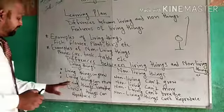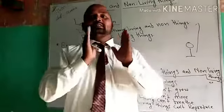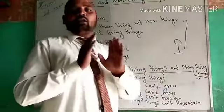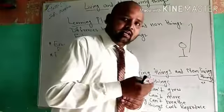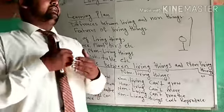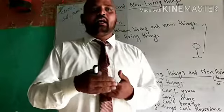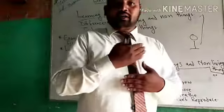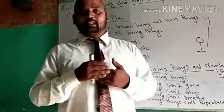Third point: living things can breathe — breathe means सांस लेते और छोड़ते हैं। Non-living things can't breathe — वो सांस नहीं लेते। Fourth and last point: living things can reproduce — it means living things अपने young ones को जन्म देते हैं, अपने जैसे बच्चे को पैदा करते हैं। And non-living things cannot reproduce — वो अपने young ones को birth नहीं दे सकते।